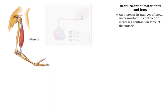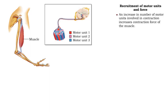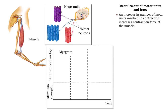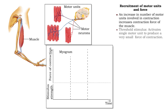Stimulation of fibers in a motor unit generates muscle tension. The more motor units involved, the greater the force of contraction. A single threshold stimulus will produce a weak muscle contraction from a single motor unit.